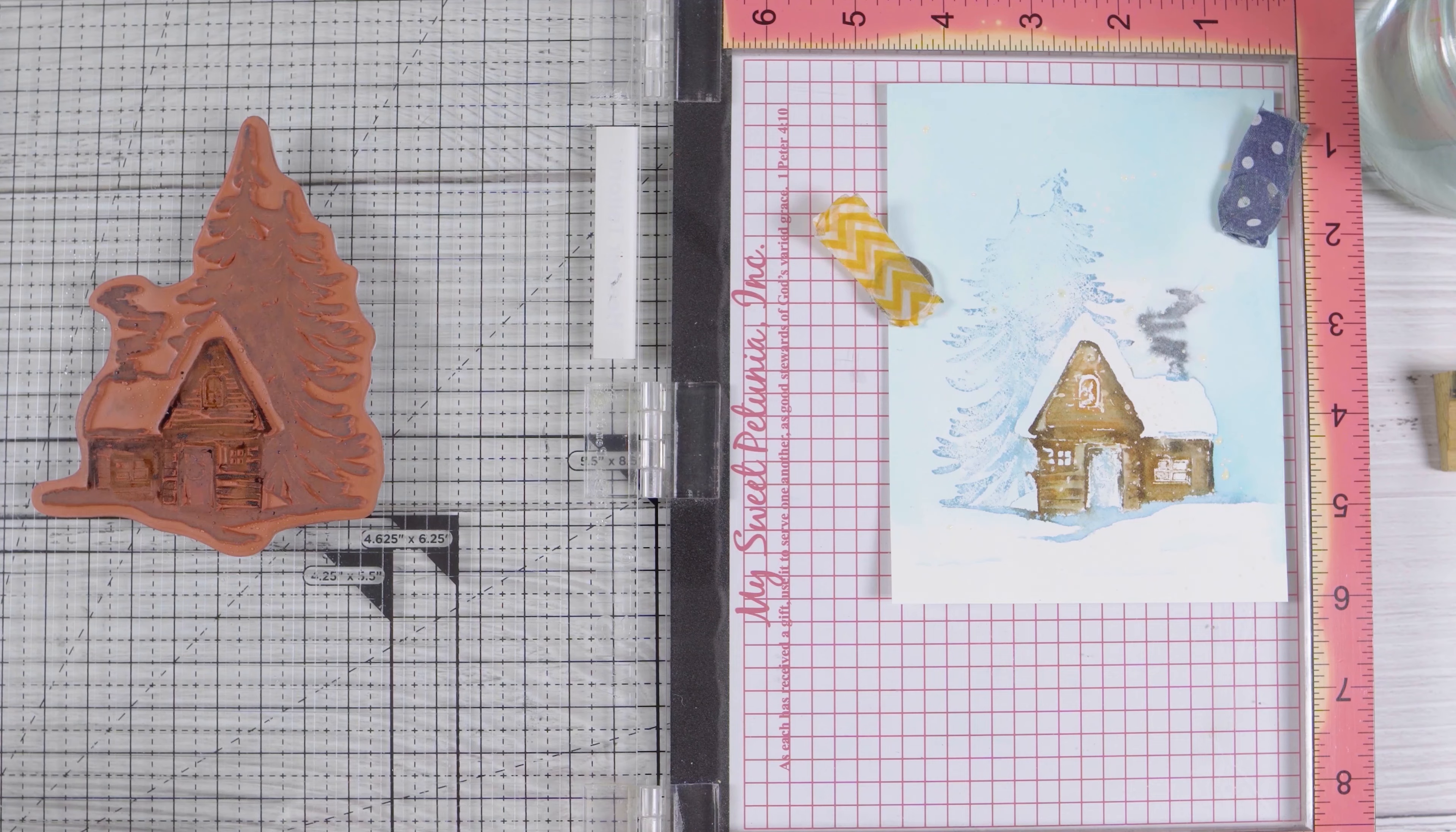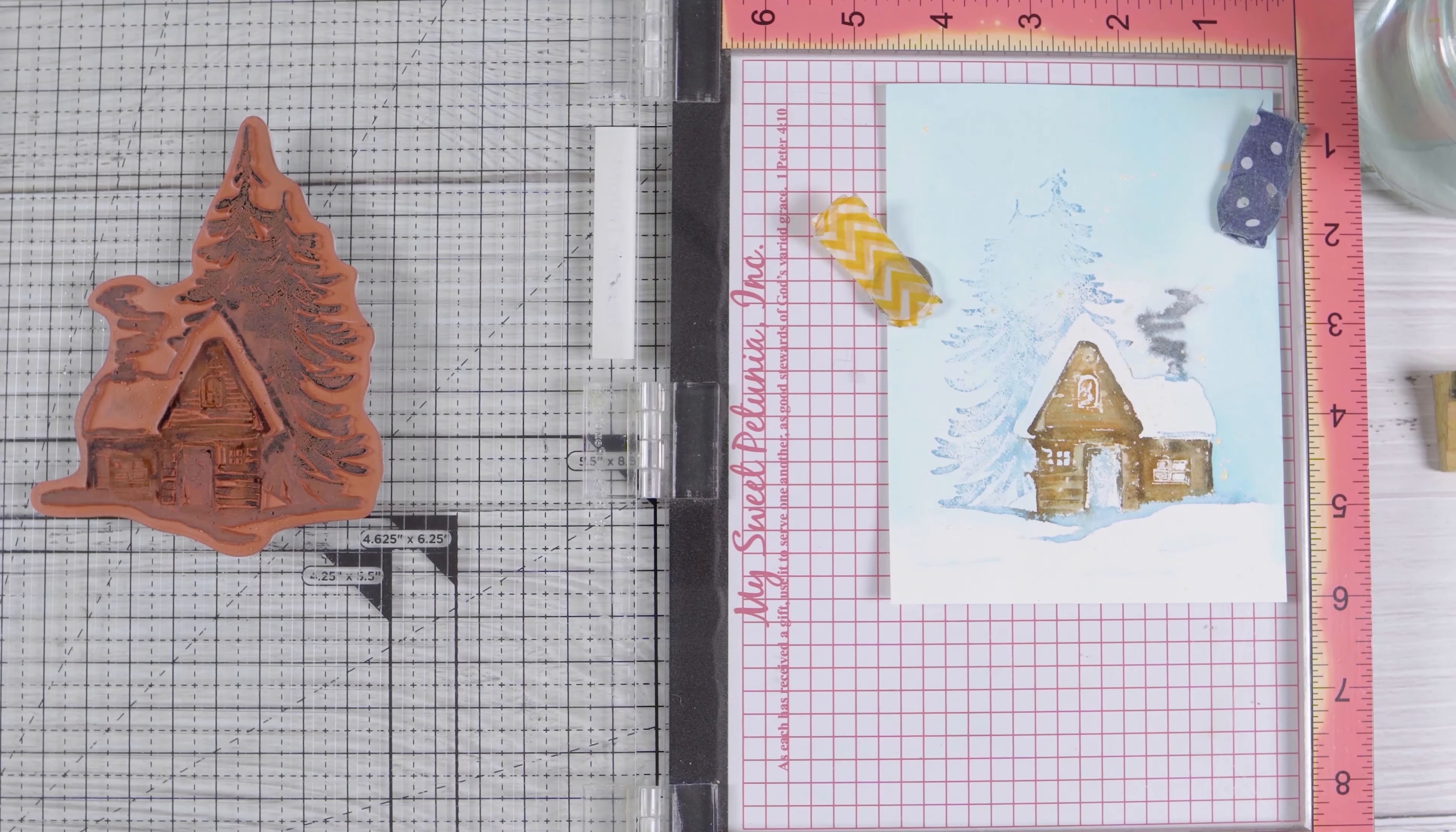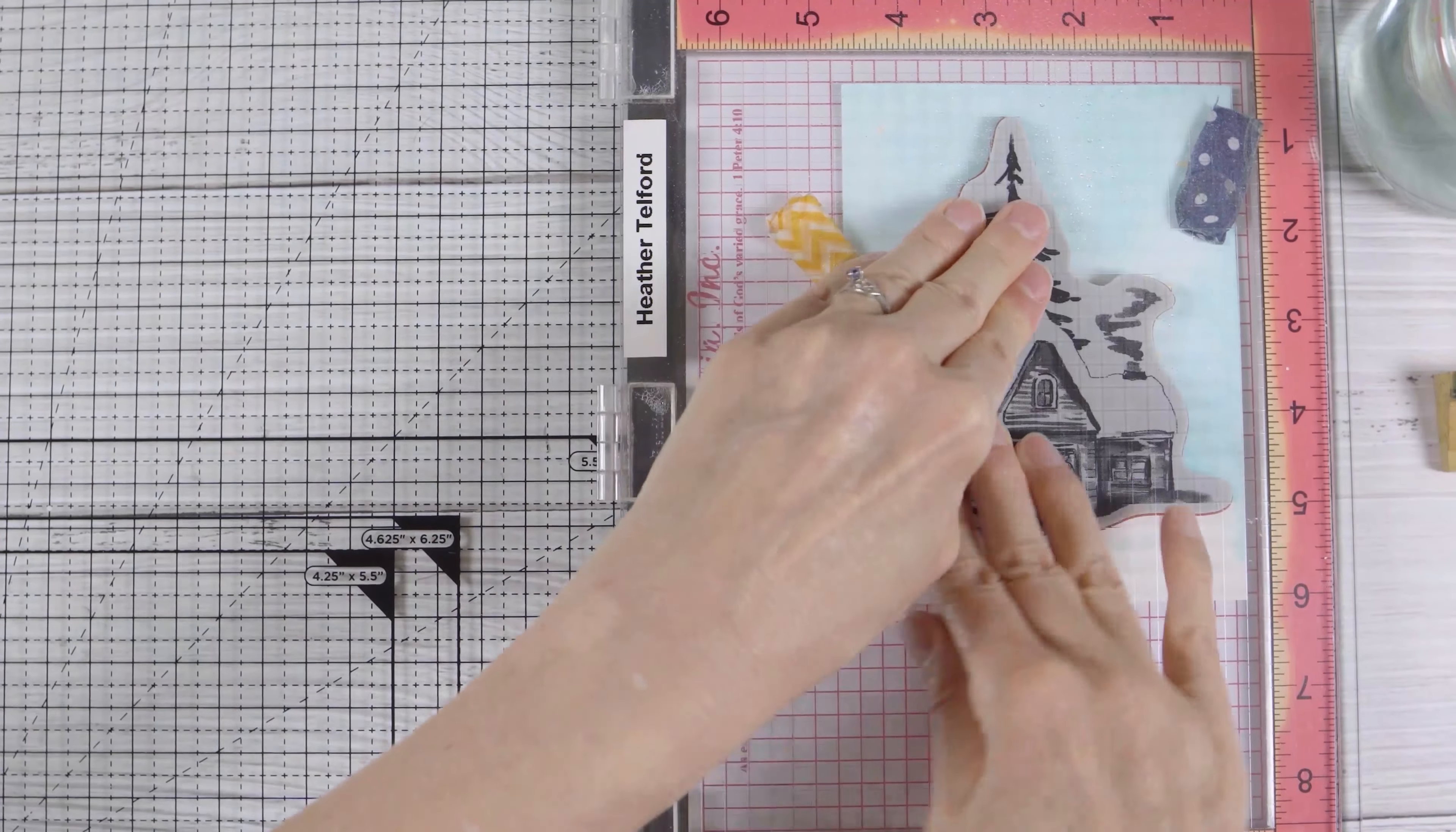While the cottage dries I'm going to work on the trees. I'm using pine needles distress ink and then just around the edges so that I'm not overlapping onto the cottage. I've switched to a marker just to help me get the ink in the right place. And I like my trees to be multi-colored as trees really are in life, so I've used a little bit of stormy sky distress ink as well. And then a little spritz on the stamp will start blending those inks together before it even hits the paper, and then it will continue to blend on the paper.